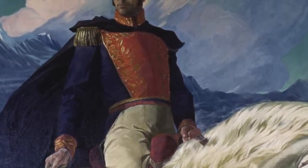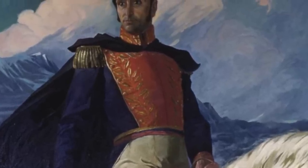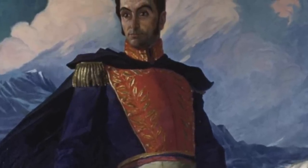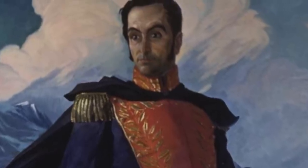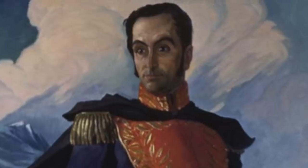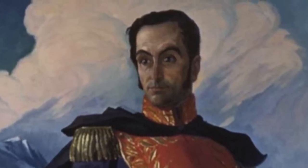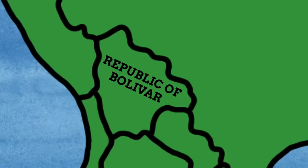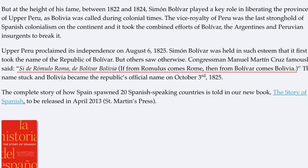As well as freeing these countries, Bolívar ruled them too — he was president of Bolivia, Colombia, and Peru, though not all at the same time. Make no mistake, this guy is of huge significance in the continent, so it makes sense why a nation would be named after him. Initially, this country was just called the Republic of Bolívar, but some wanted it to have a more country-like sounding name. Supposedly, Congressman Manuel Malatine Cruz said on the matter: 'If from Romulus comes Rome, then from Bolívar comes Bolivia,' in regards to how to construct a proper country-sounding name from the name of their liberator.